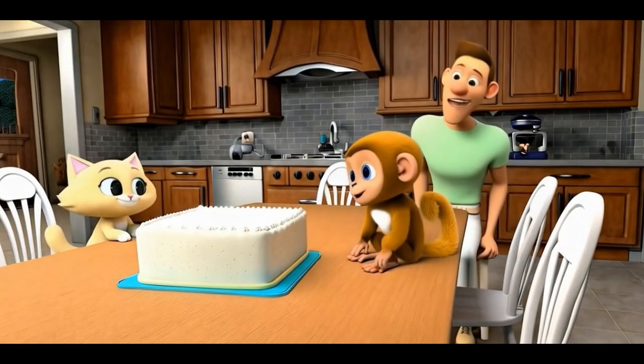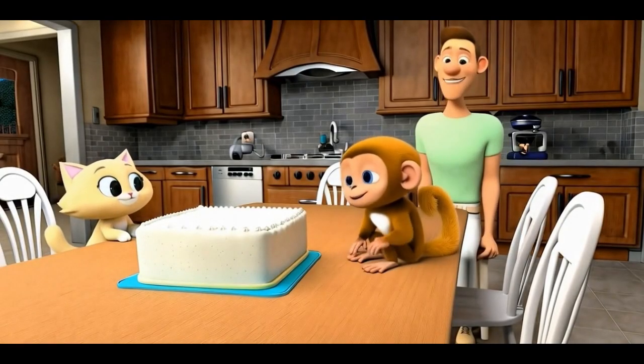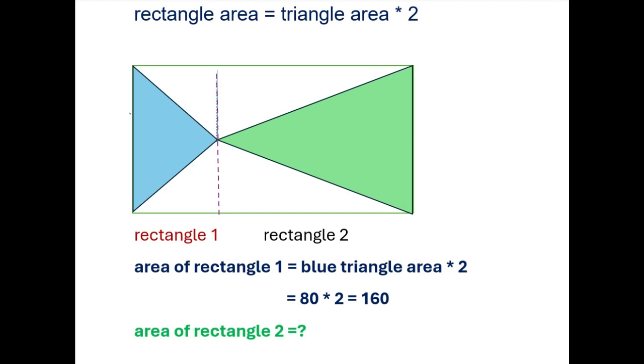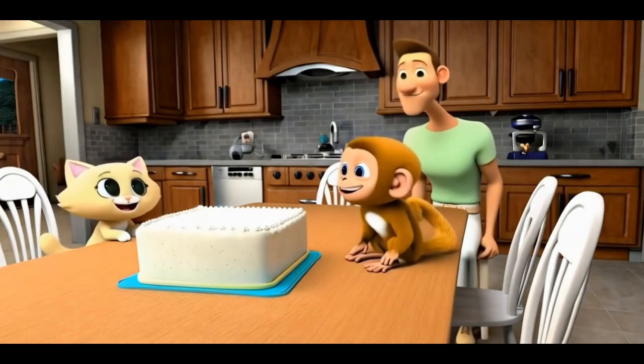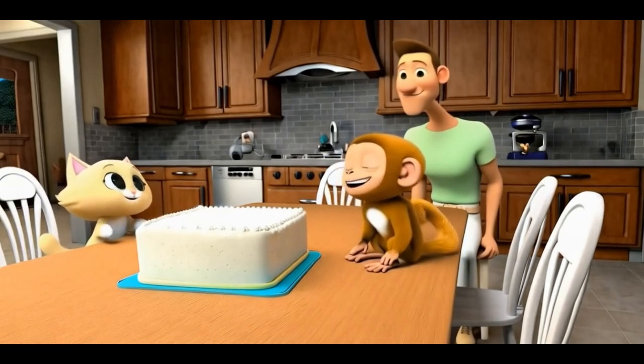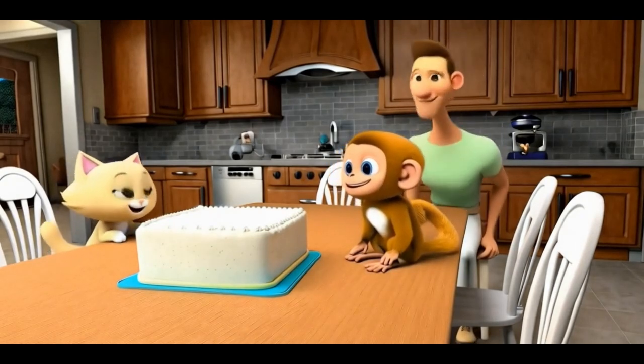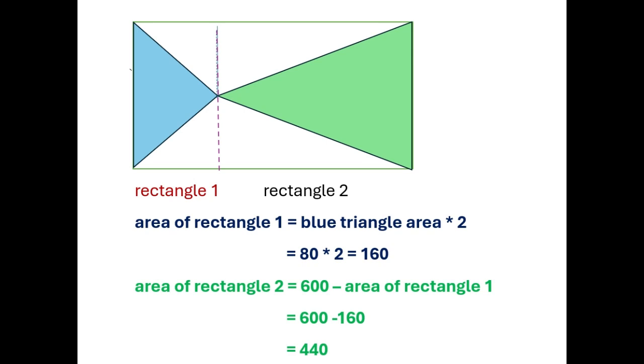Do you understand now? Yes, Daddy. So surprised! Now who knows how much is the area of rectangle 2? It is the total area minus rectangle 1, which is 600 minus 160 and equals 440 square inches.